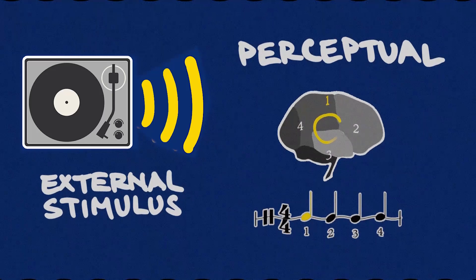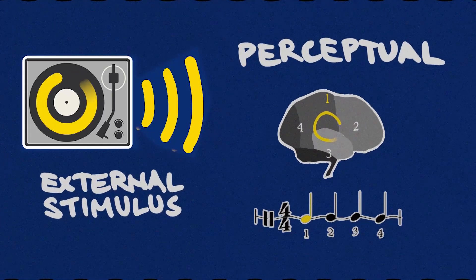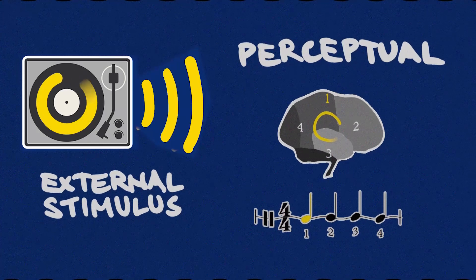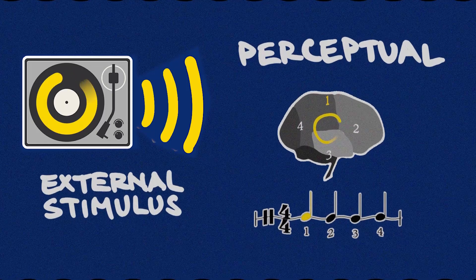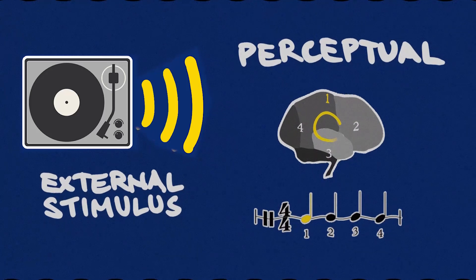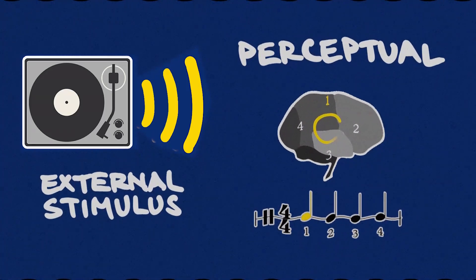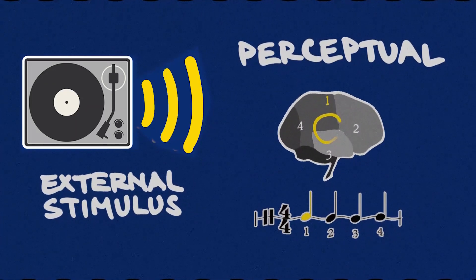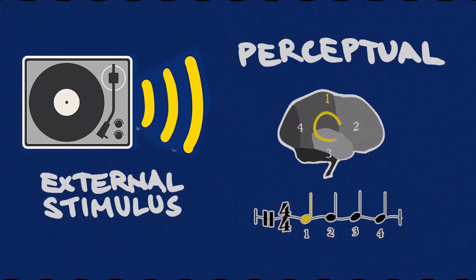Try tapping along to a beat — listen and really lock into the rhythm. Tapping studies show that participants consistently tap a few milliseconds before the beat. If they were only reacting to the beat, they'd be tapping a few milliseconds afterwards. This is how we know that we predict and anticipate future beats rather than just react to the beats we hear.